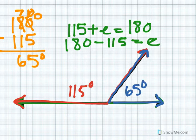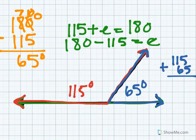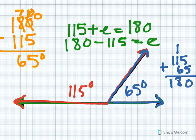One way to check is to add 115 plus 65, which equals 180 degrees. When I added 115 plus 65, I got 180. These two angles added together equal 180 degrees. 180 degrees is called a straight angle.